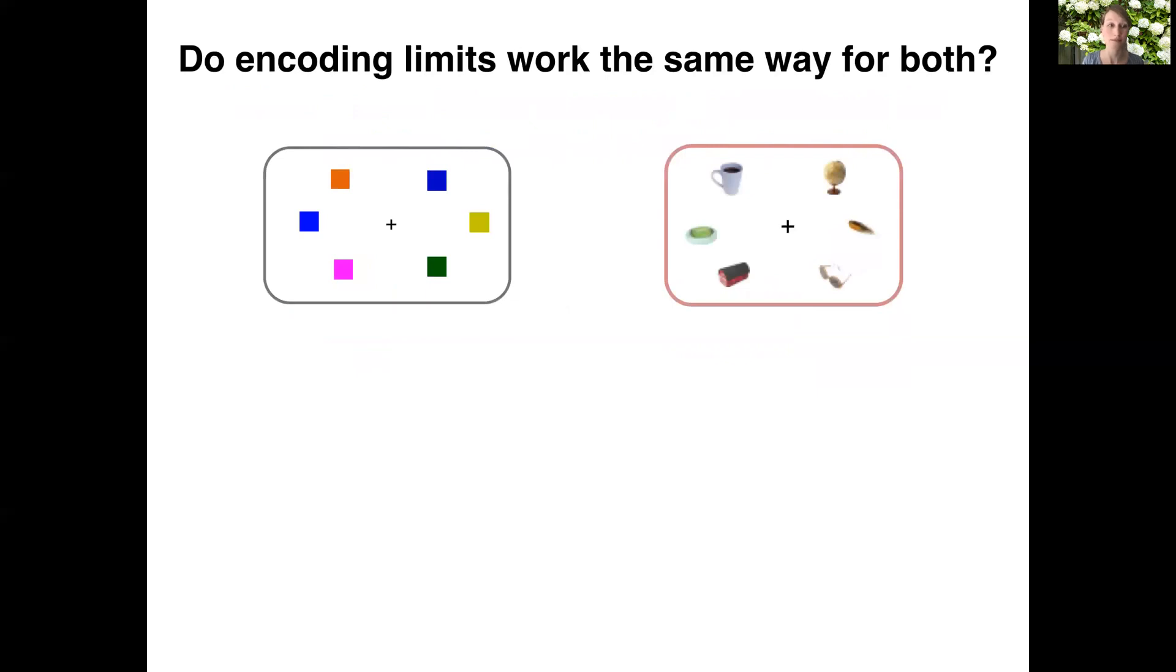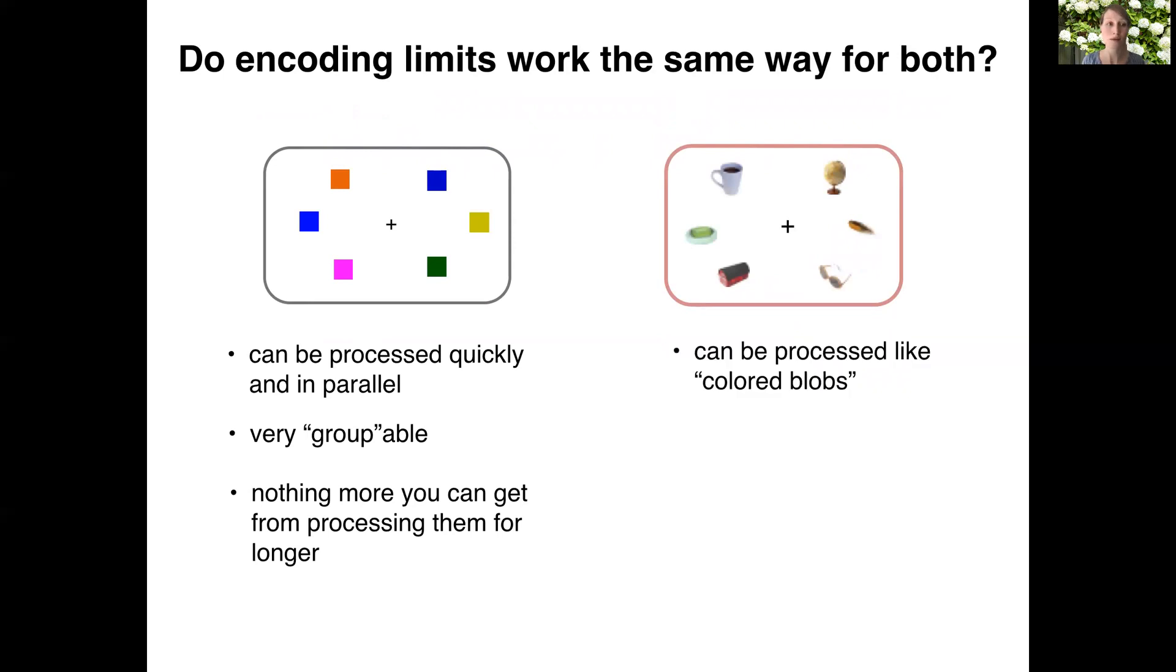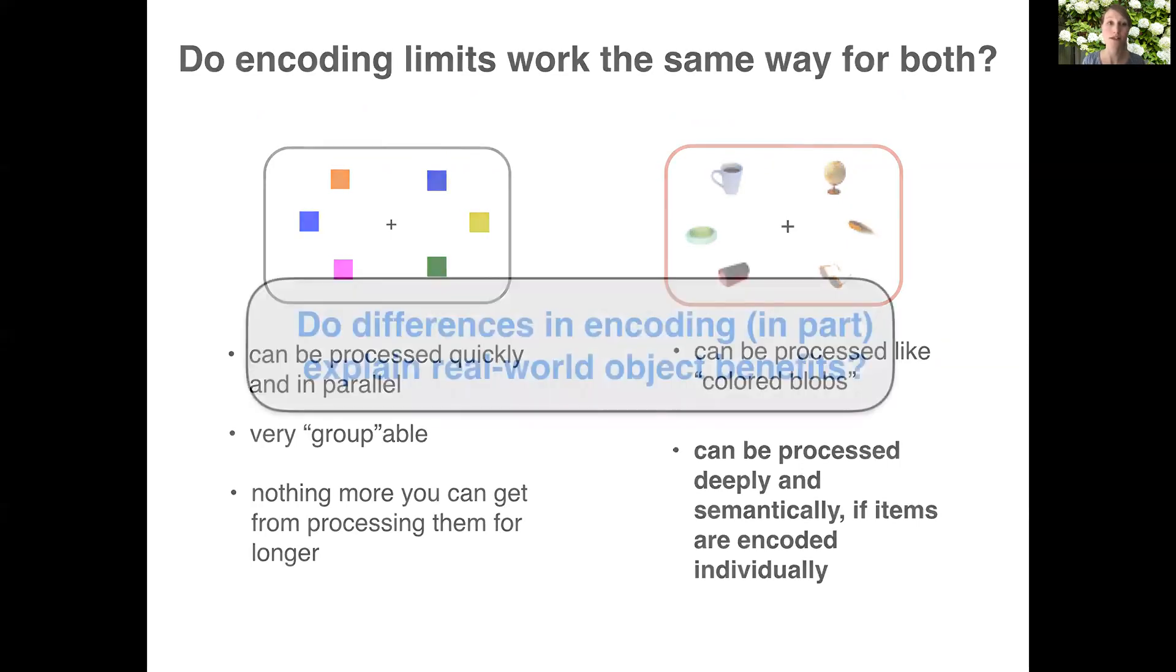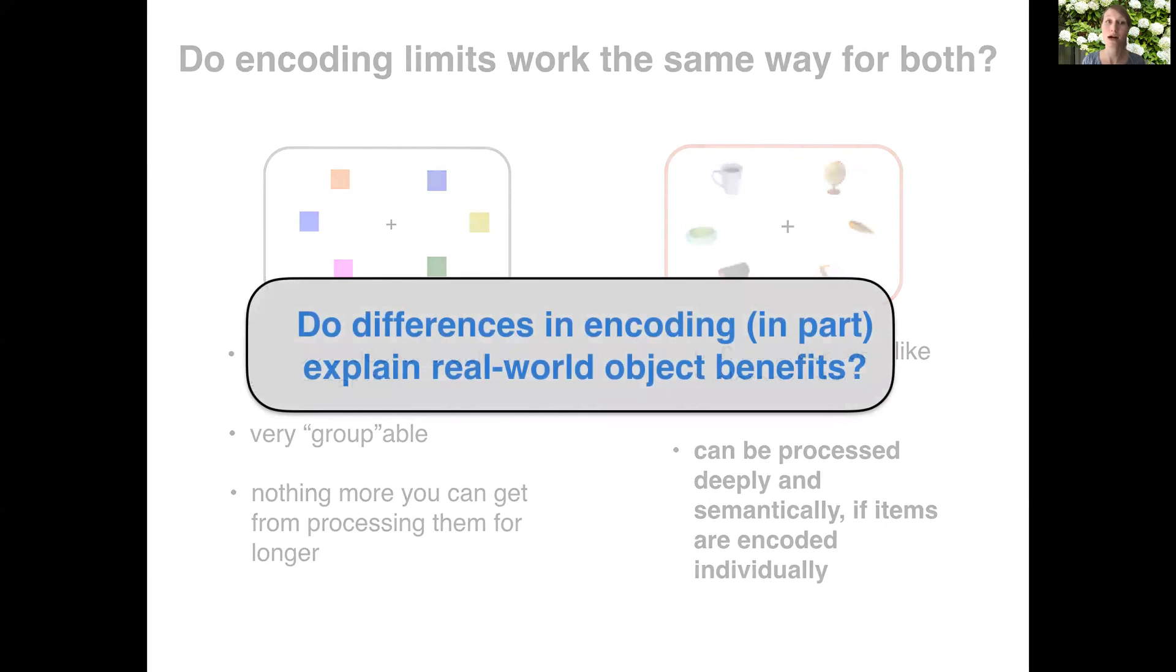Why would this be the case? Simple color displays can be processed quickly and in parallel, and so really even if I showed you a color display for a longer time, there's not much more you'd get out of it. And while a display with real-world objects can be processed in just the same way, it can also be processed in a fundamentally different way, namely deeply and semantically, when items are focally attended and processed individually. And so today I want to ask whether these differences in encoding can at least in part explain the real-world object benefit in working memory.